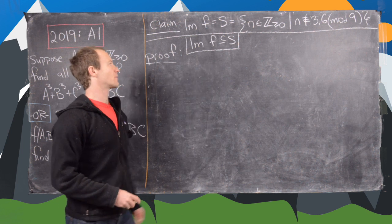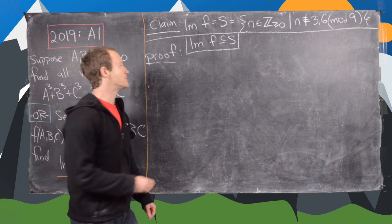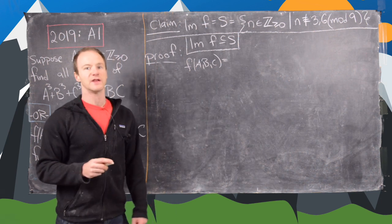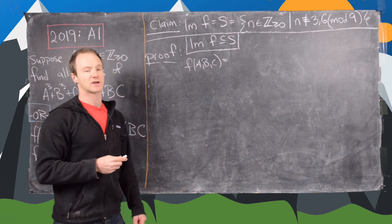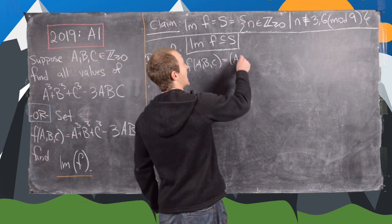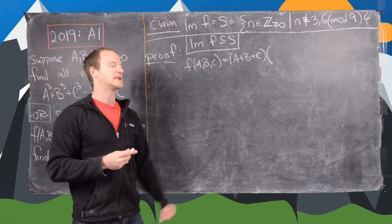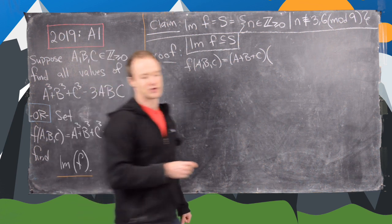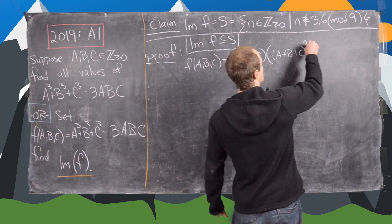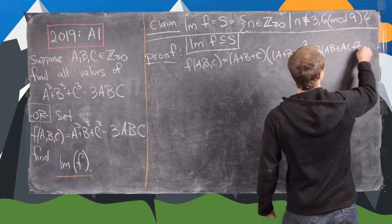Now we finish proving the image of f is a subset of S by using a second factorization of f. This builds on the previous one: f(a,b,c) = (a+b+c)·[(a+b+c)²−3(ab+ac+bc)]. It's elementary algebra to verify this factorization matches the original expression.